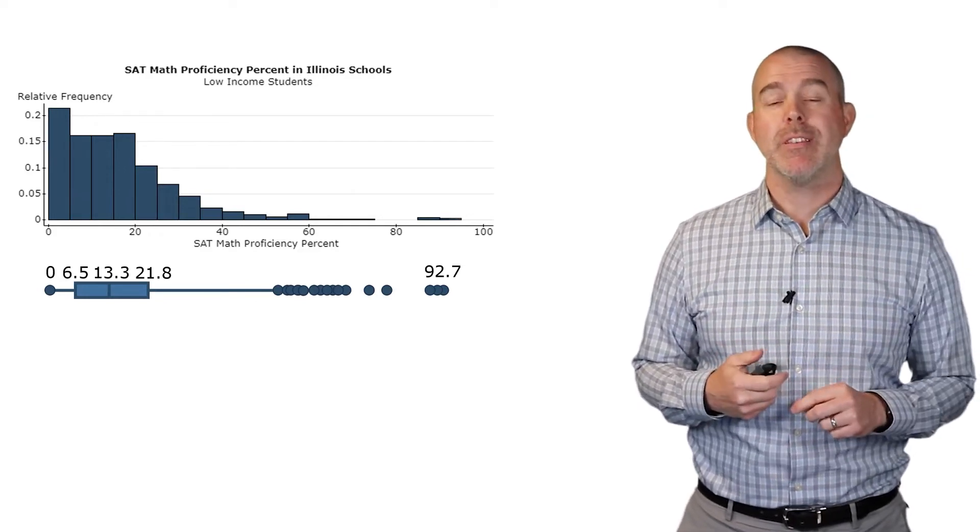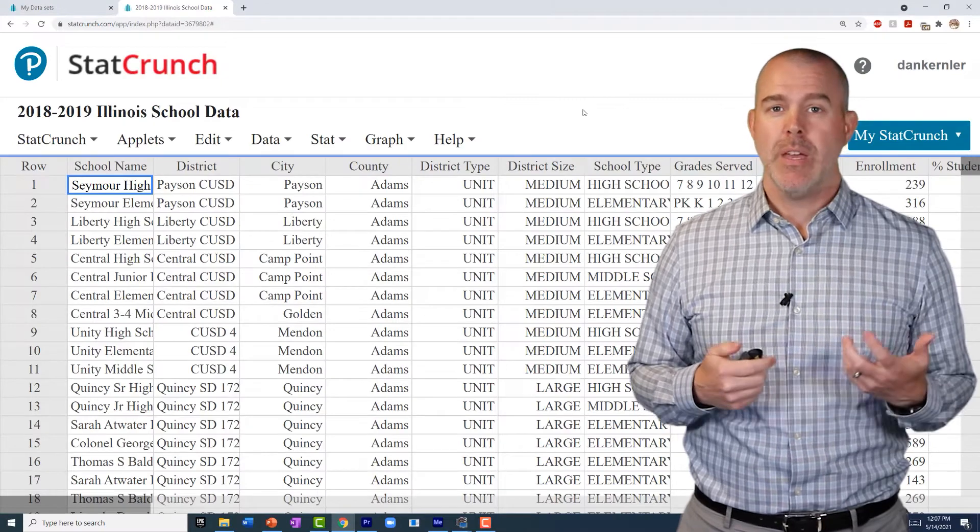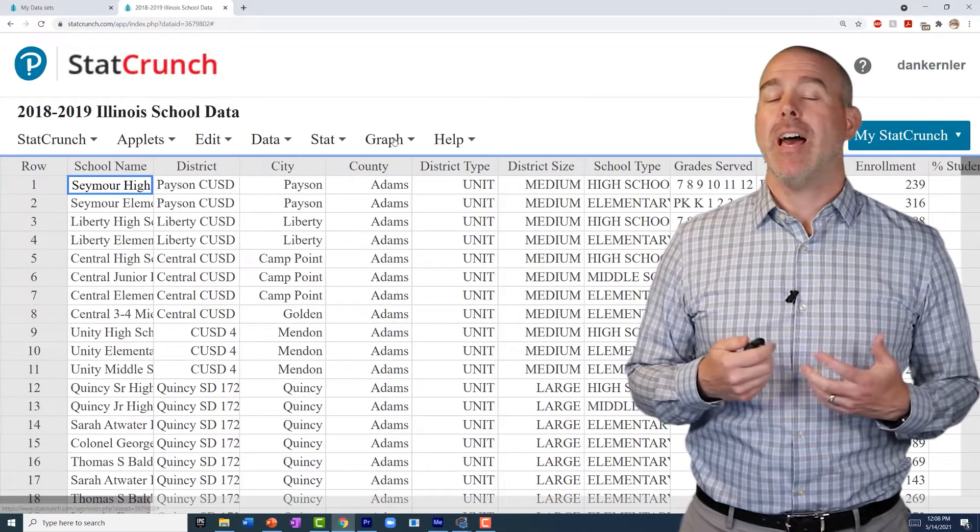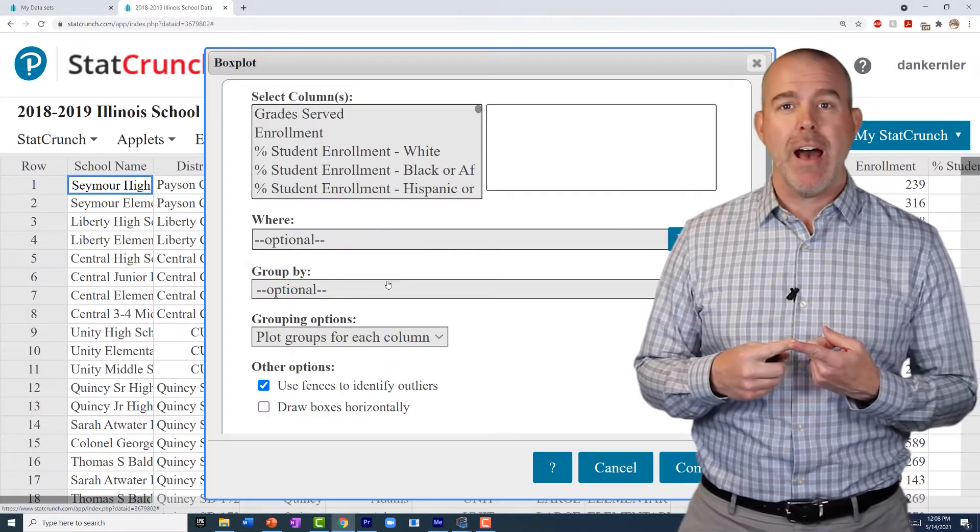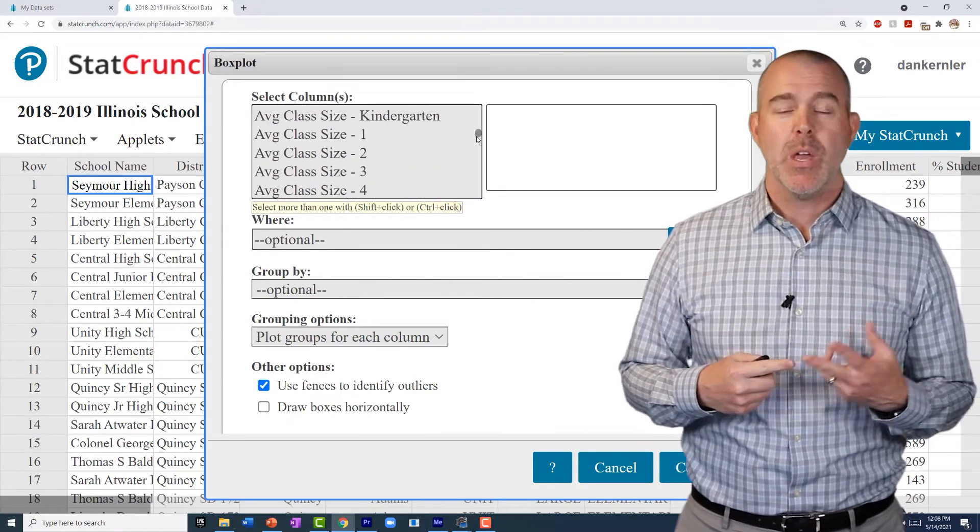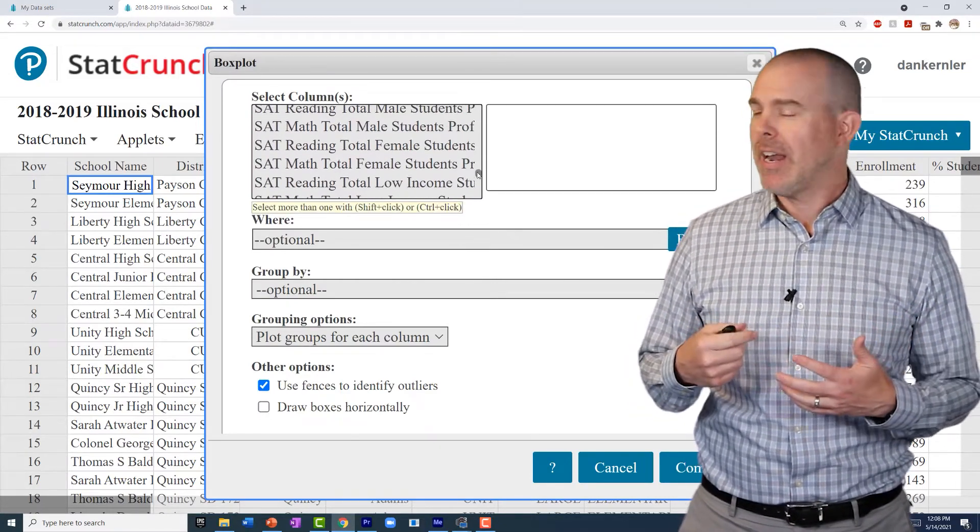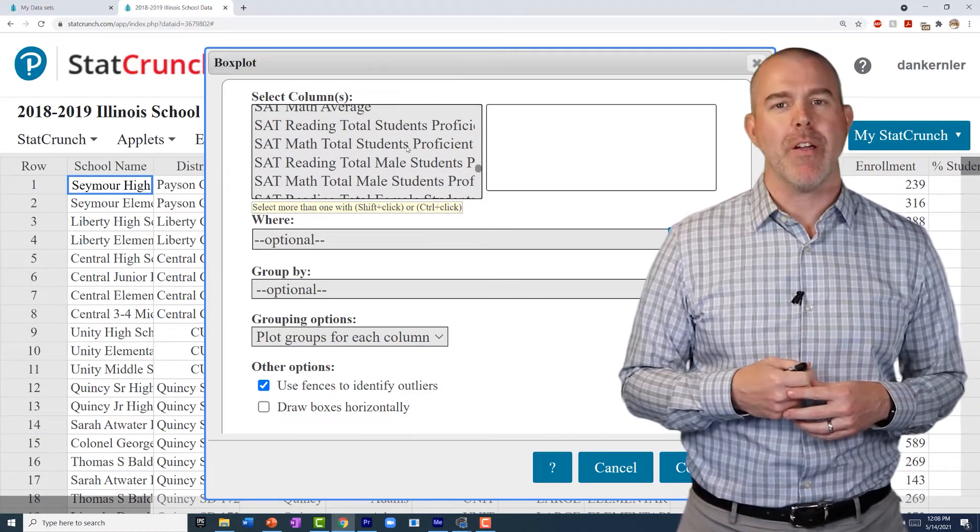So let's talk about how to do this in StatCrunch. It's pretty straightforward. Like the rest of the graphs, you're going to go to Graph, in this case, Box Plot. We'll pick our variable. I'm going to scroll down. It's kind of toward the bottom. So we'll pick our variable.